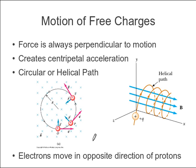Electrons are going to move in the opposite direction of protons. So while a proton might go counterclockwise in this situation, an electron would go clockwise. And again, we're going to see a little bit about this, but the main focus of our lecture today is on charges which are not free.